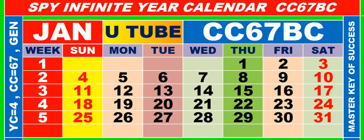Good morning, dear friends. You are heartily welcome in Master Key of Success. In this video you are watching SPY Infinite Year Calendar for the year having calendar code equal to 67. You can also search it on YouTube as BCC 67 BCC.